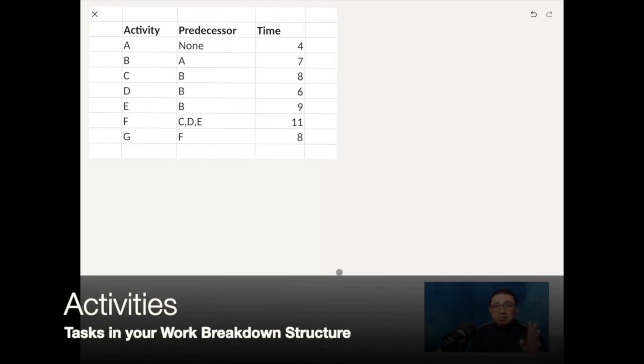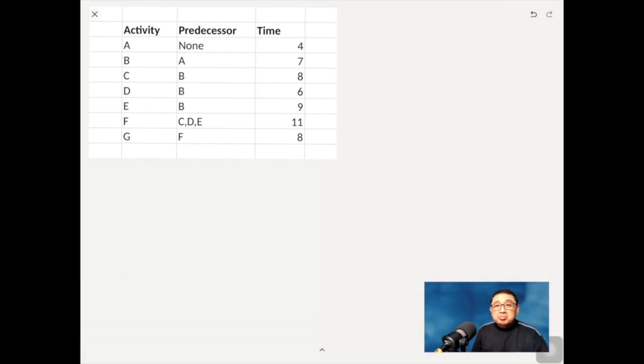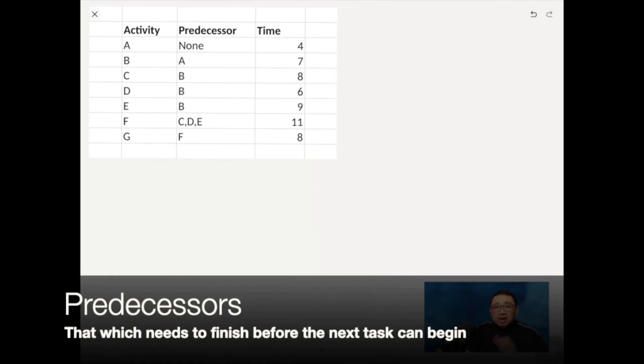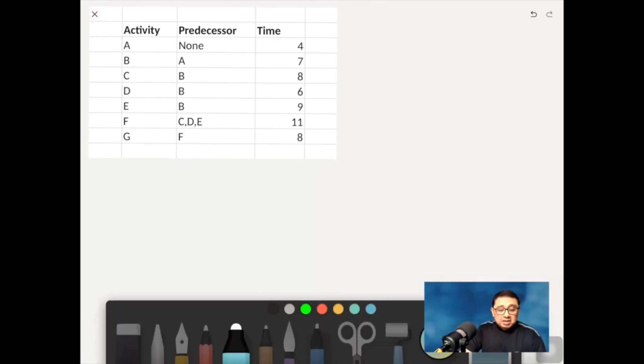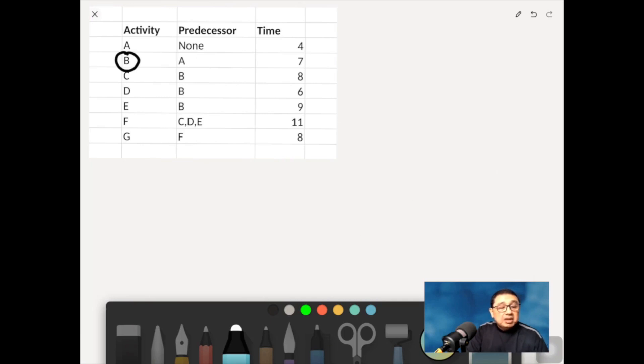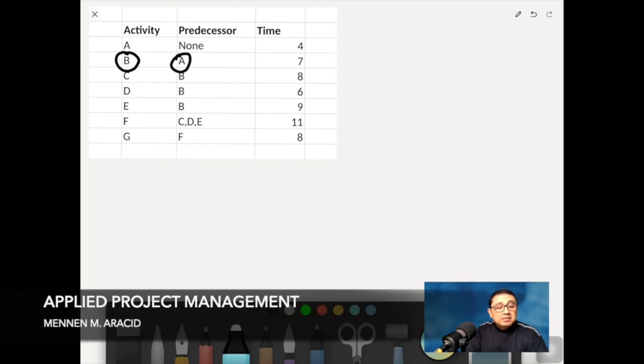With the following predecessors and the predecessor as earlier discussed is nothing but a required activity that needs to finish before the next activity can begin. So if you try to take a note of this one, activity B, for example, can only start if the predecessor A is finished.